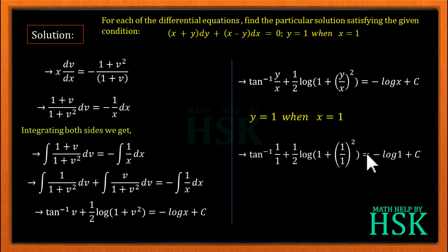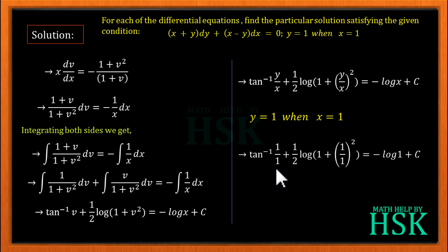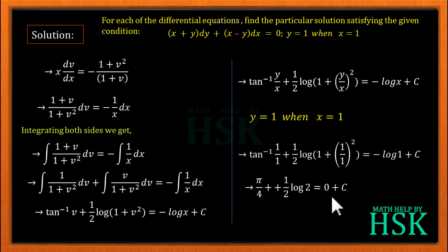Since log(1) = 0, we get tan⁻¹(1) = π/4, and the term becomes π/4 + ½ log 2 = C. So C = π/4 + ½ log 2.